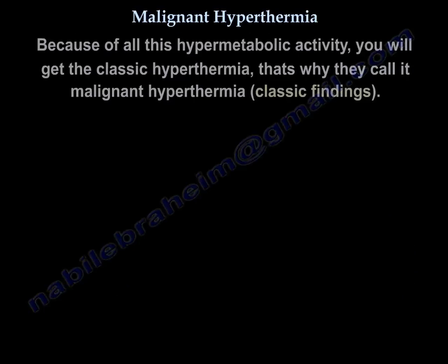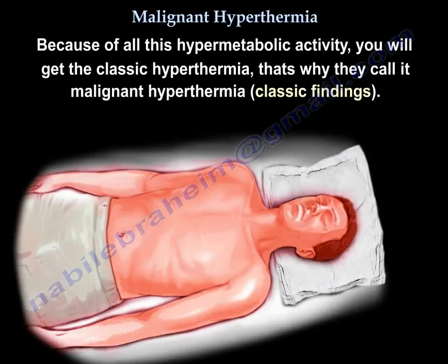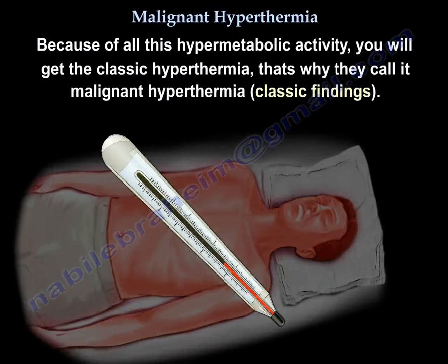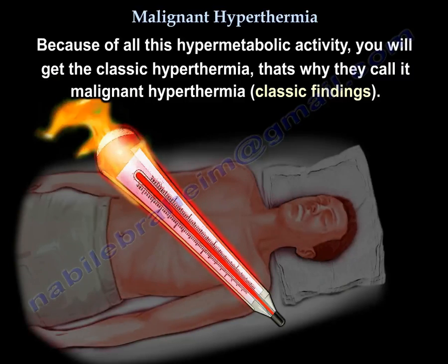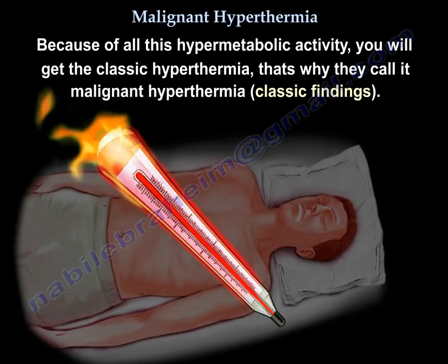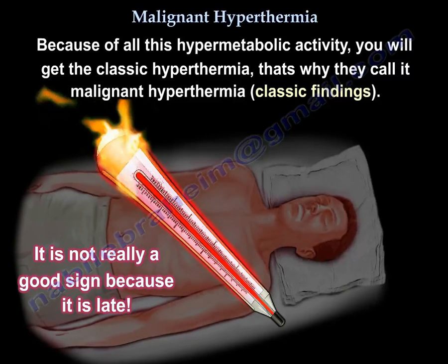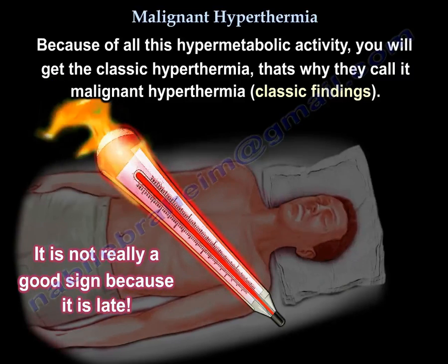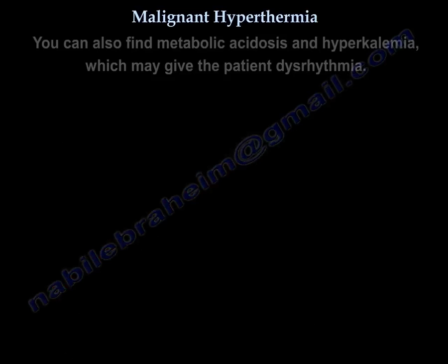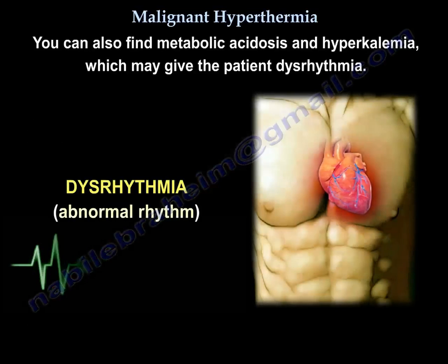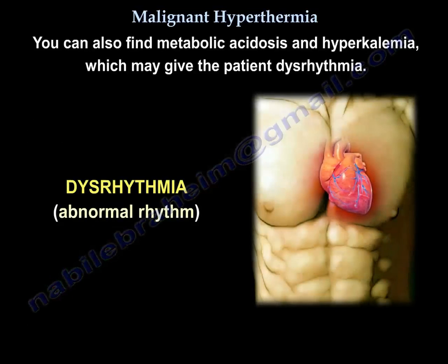Because of all this hypermetabolic activity, you get the classic hyperthermia — that is why it is called malignant hyperthermia. However, it is not really a good early sign because it appears late. You can also find metabolic acidosis and hyperkalemia, which may cause dysrhythmia in the patient.